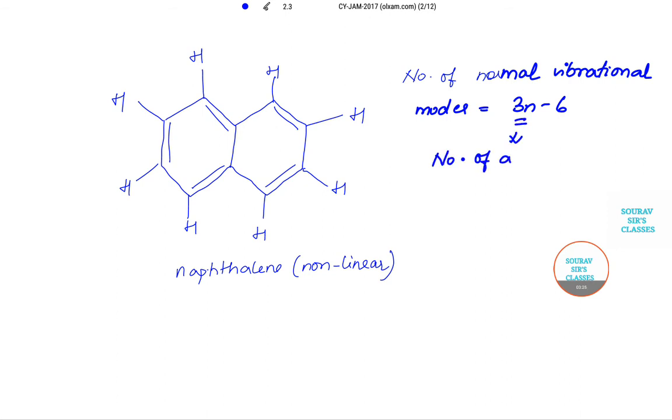Now the total number of atoms in naphthalene, let me write it, in naphthalene, is - just pause the video and tell me the answer. Yes, you are correct, it is actually 18.